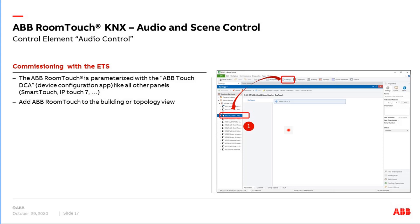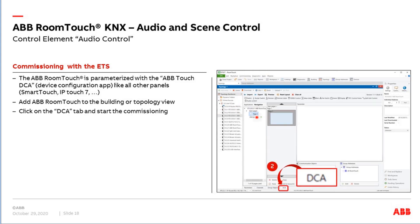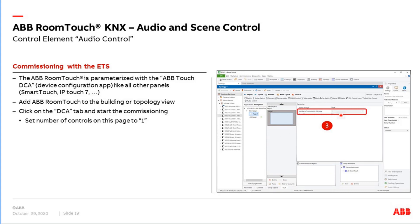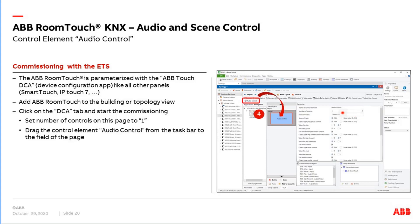Now let's come to the commissioning of this audio control together with the Bush Control Touch. First, we add a RoomTouch from the catalog or continue with an existing RoomTouch in our ETS project, then create a new page. What is necessary is clicking on the so-called DCA — the Bush RoomTouch is not commissioned via the parameter windows, we need this DCA app. We click on the DCA button, then set the parameter that we can have maximum one control on this page, because the audio control element needs a complete page.